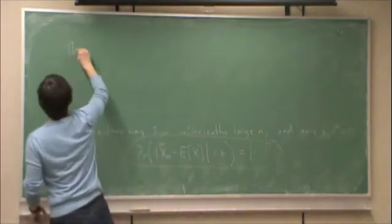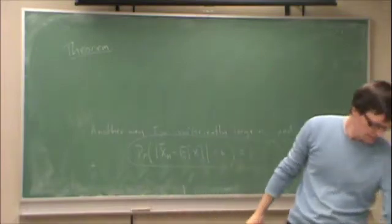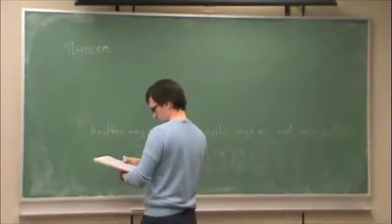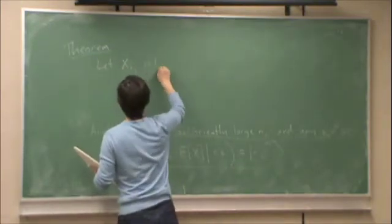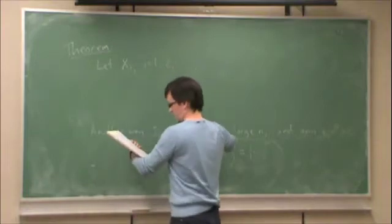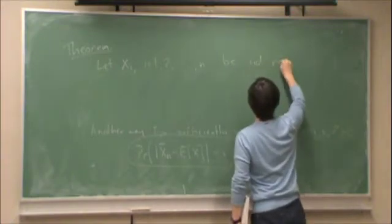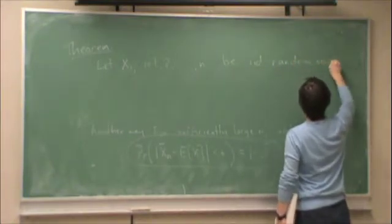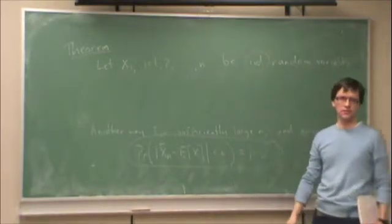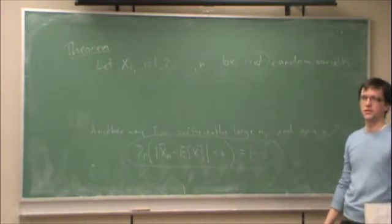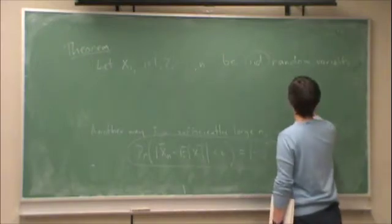Theorem. Let XI, I equals 1, 2, and so on up to N, be IID random variables. Does anybody know what IID stands for? What does it stand for? Identically independent. It stands for independent and identically distributed.